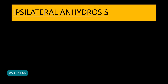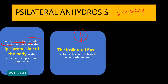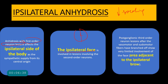Another feature is loss of sweating — anhydrosis. The extent depends on the order of neuron affected. In first order neuron lesions, the entire half of the body is affected. In second order neuron lesions, anhydrosis affects the ipsilateral half of the face. In third order postganglionic lesions, most vasomotor and sudomotor fibers have already branched off, so anhydrosis is very limited — present only in a small area adjacent to the ipsilateral brow.